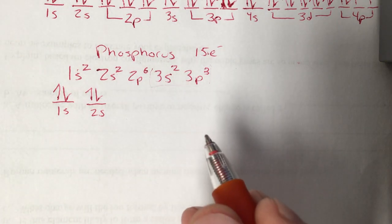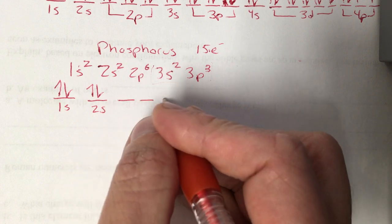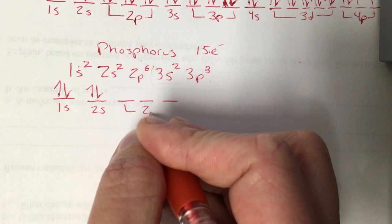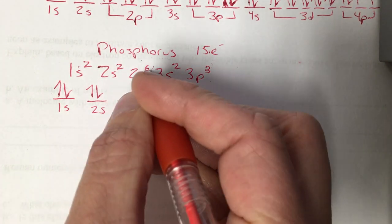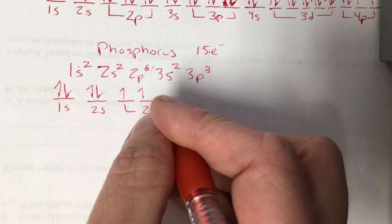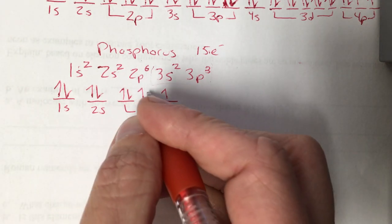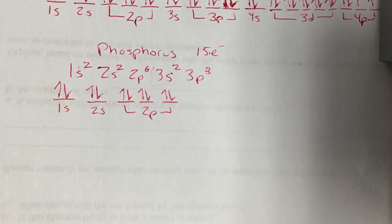Remember, the p is a collection of 3 suborbitals. So 3 blanks. Fill it up one at a time until you get to 6. 1, 2, 3. Those are our ups. Now we'll start doubling up the down arrows. 4, 5, 6.